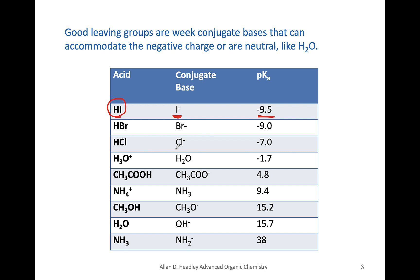Here is another example: chloride. Cl⁻ is a good leaving group. Its conjugate acid is HCl, a strong acid as shown by the pKa value. Therefore, Cl⁻ is a good leaving group. Since HI is a stronger acid than HCl, I⁻ is a better leaving group than Cl⁻ because I⁻ is a weaker conjugate base, hence a better leaving group.